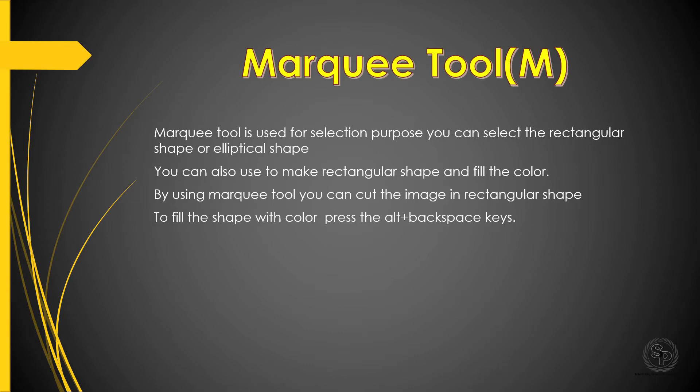Welcome to Ship to the Education online classes. Today we are going to see the Marquee tool in Photoshop. The shortcut key for the Marquee tool is M — just press M from your keyboard and the Marquee tool is available for you.